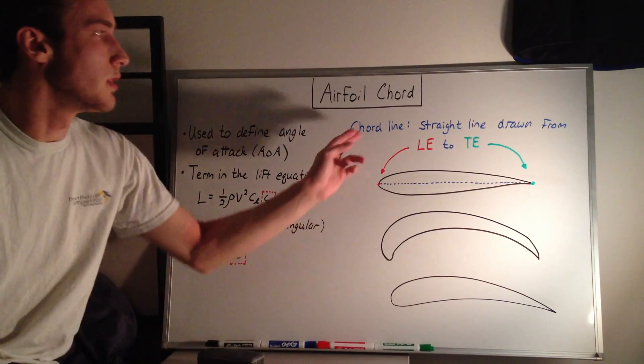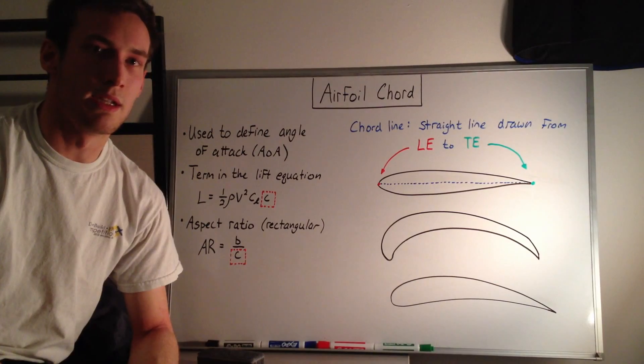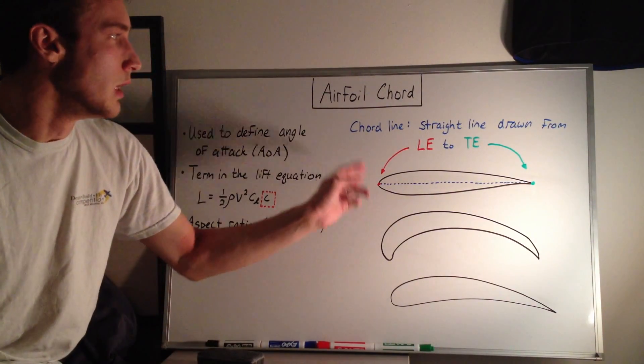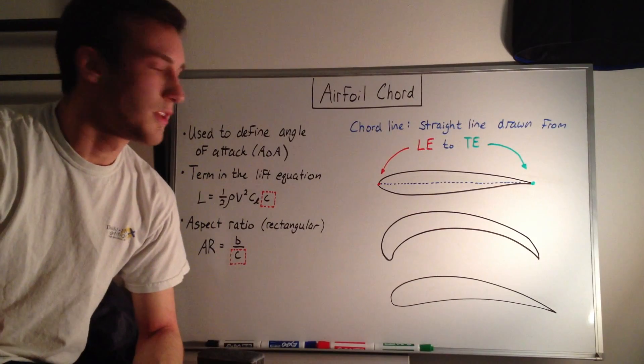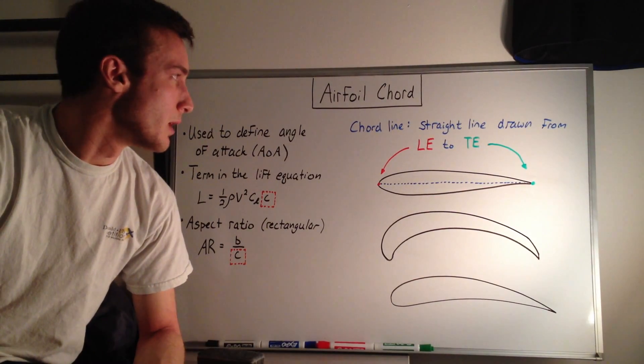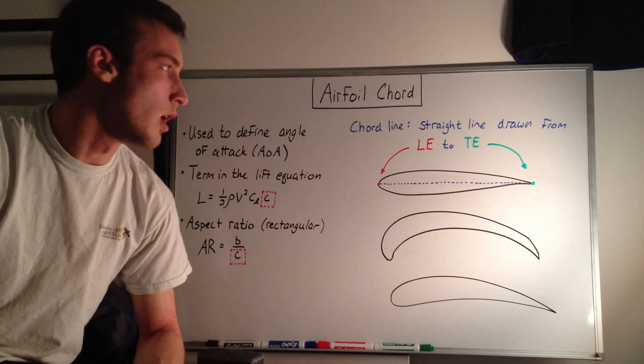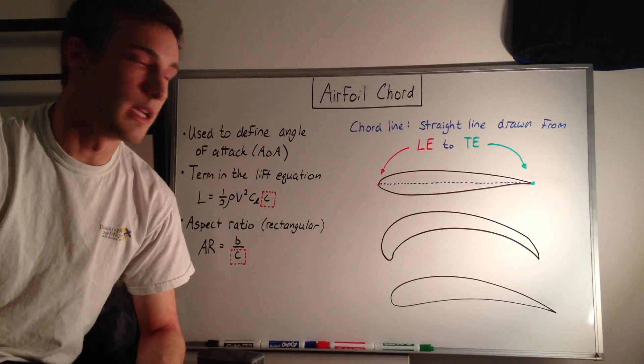The cord line definition is really an imaginary straight line drawn from the leading edge to the trailing edge, which I've labeled in red and green. And this is a pretty simple definition, but the thing that you have to be careful about is what are the definitions of the leading edge and the trailing edge.